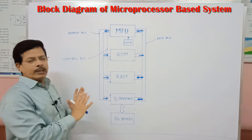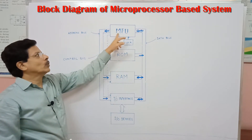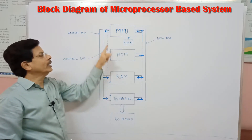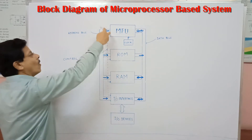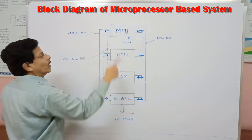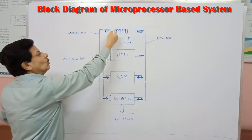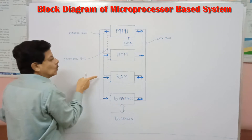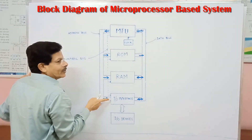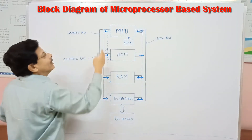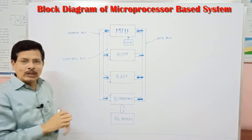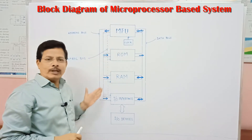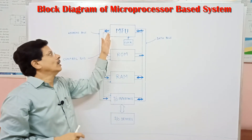The microprocessor has to select a particular location or particular device, so it always sends the address on the address bus. On the address bus it goes from the microprocessor to RAM, ROM, and I/O interface. The address bus is unidirectional, meaning it goes from the microprocessor to the different devices. Its function is just to carry the address sent by the microprocessor to various devices.